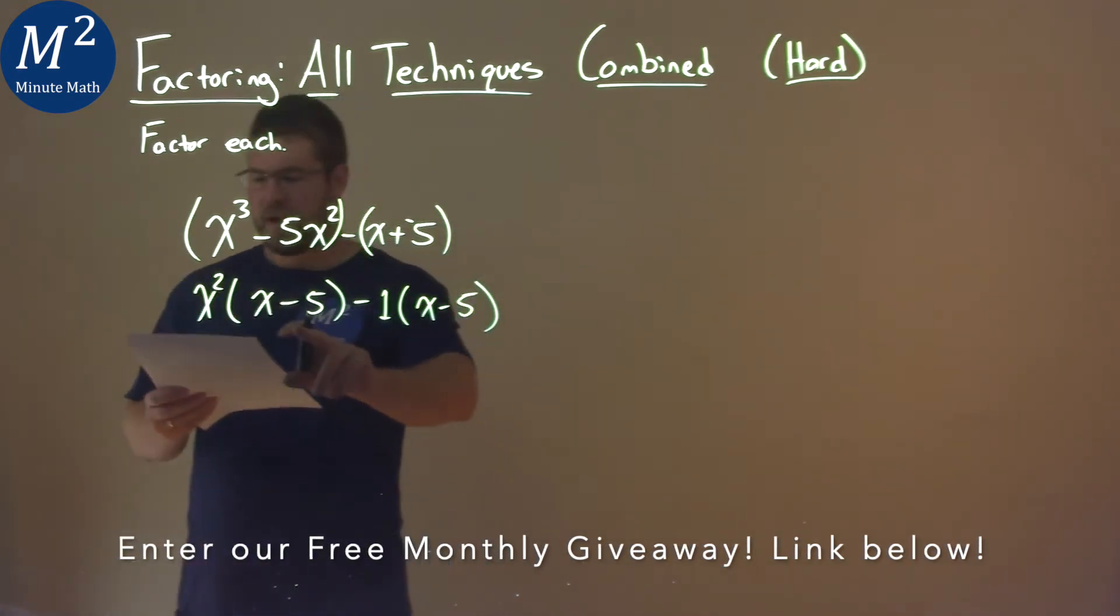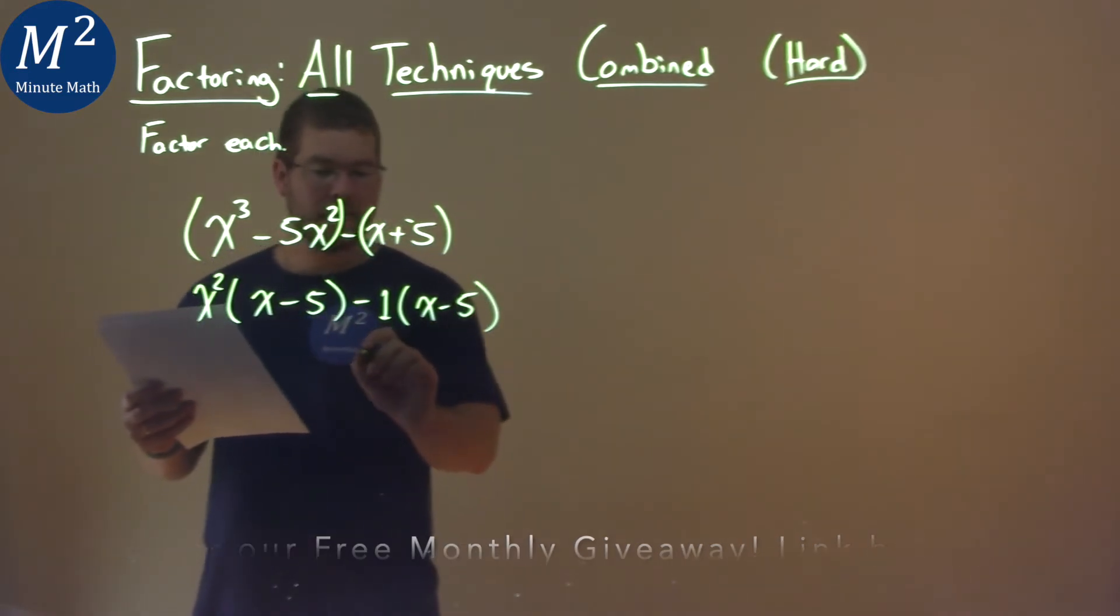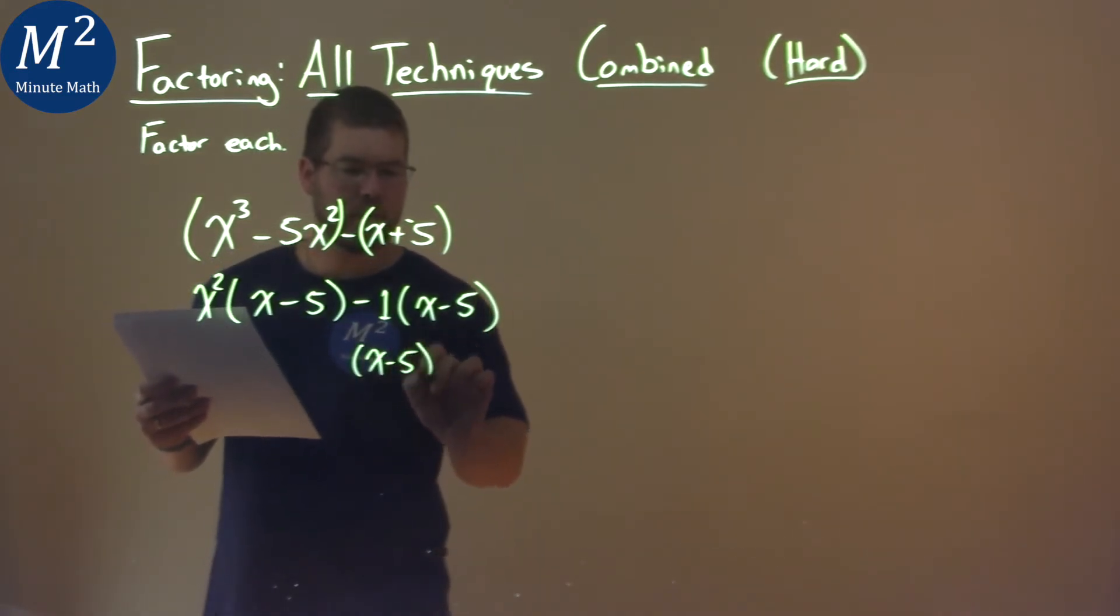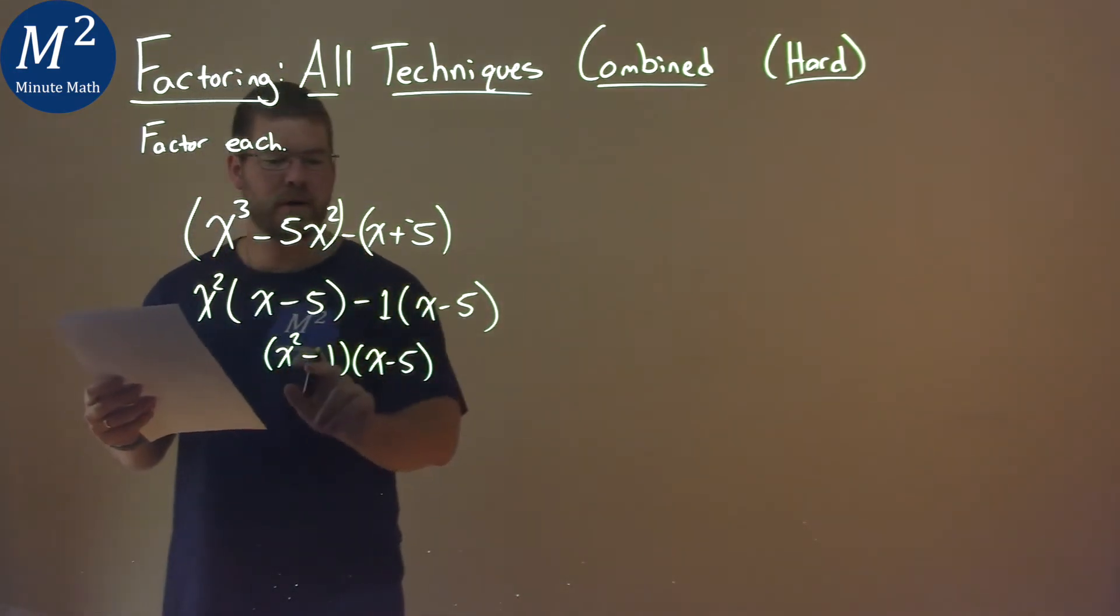Hopefully you can see we have an x minus 5 written twice. So we pull that x minus 5 out from both sides, and we're left with that x squared minus 1, right there, the x squared minus 1.